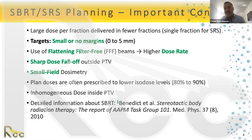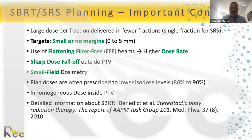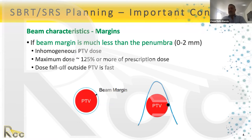Hot spots of 125% and beyond are acceptable because they are inside the PTVs and GTVs. However, make sure for lung that the hot spot stays inside the PTV, because when you are constraining other things too much, the treatment planning system may push dose to unwanted places. There is a very good AAPM report, TG-101, listed in the references at the end.